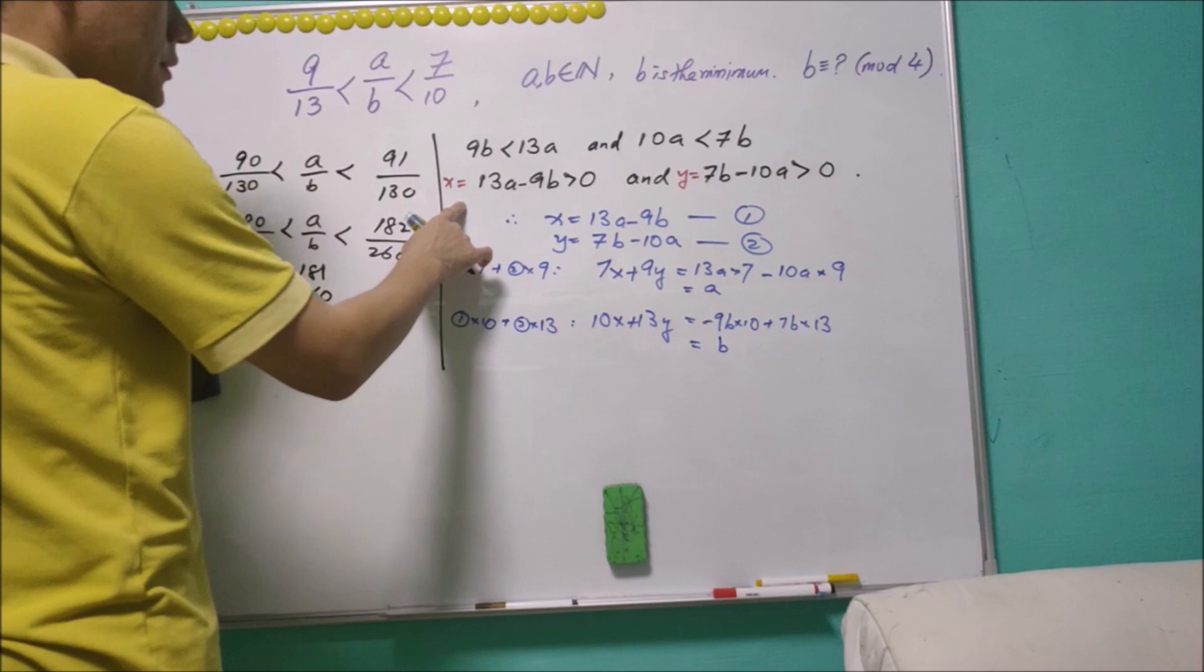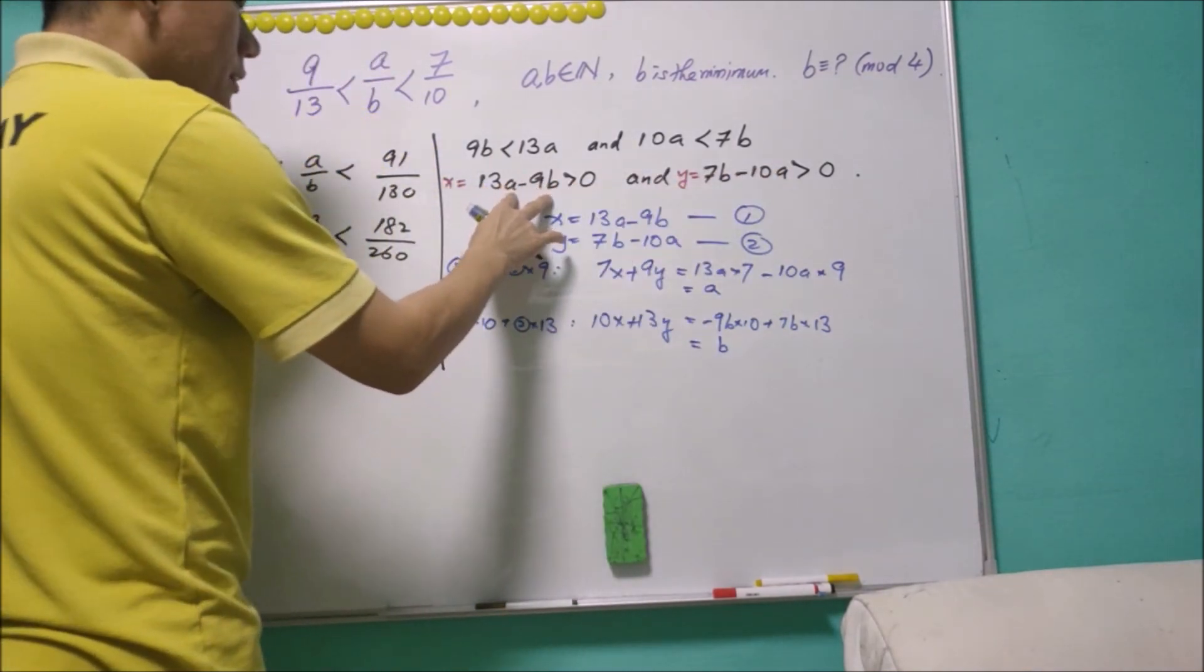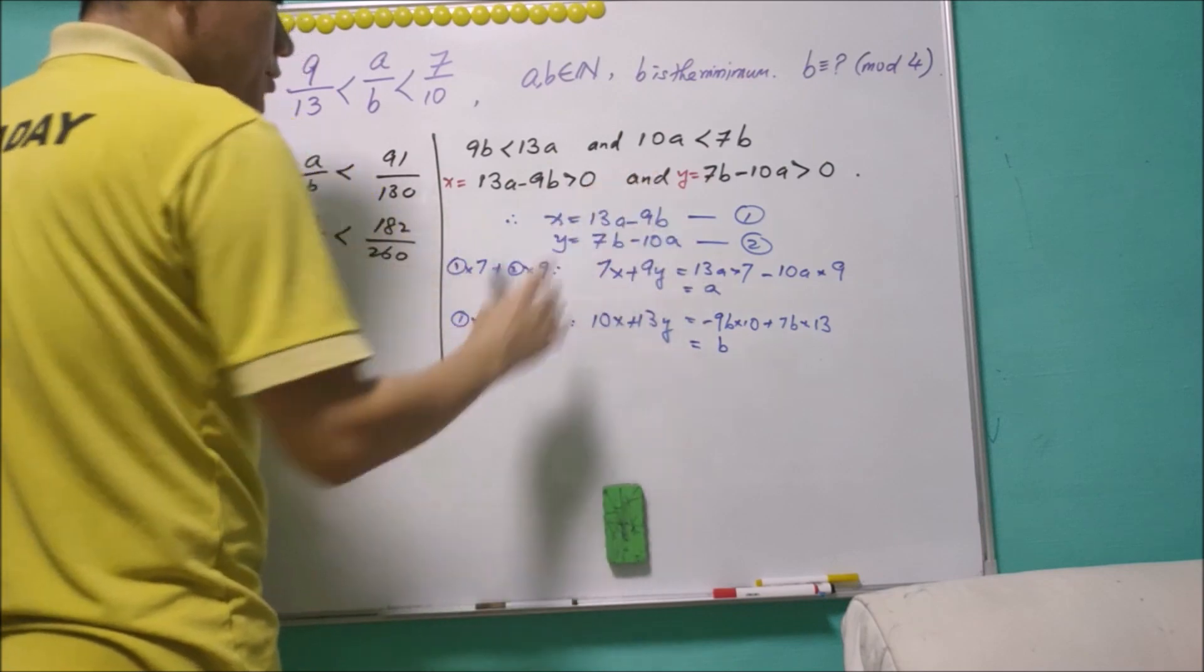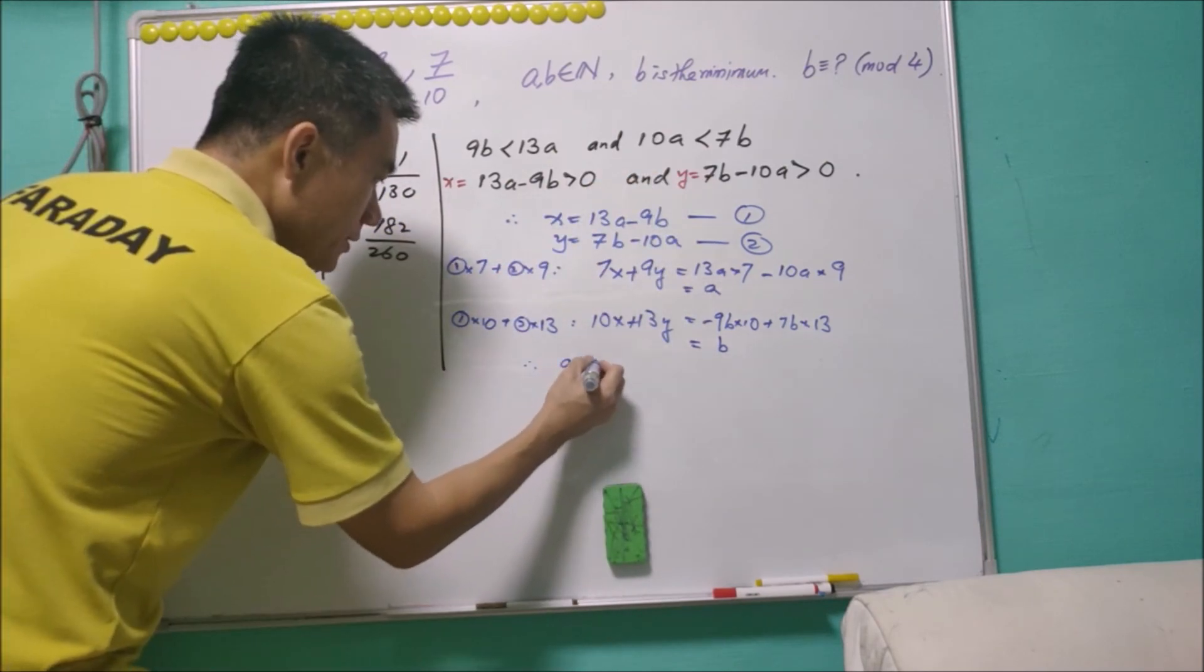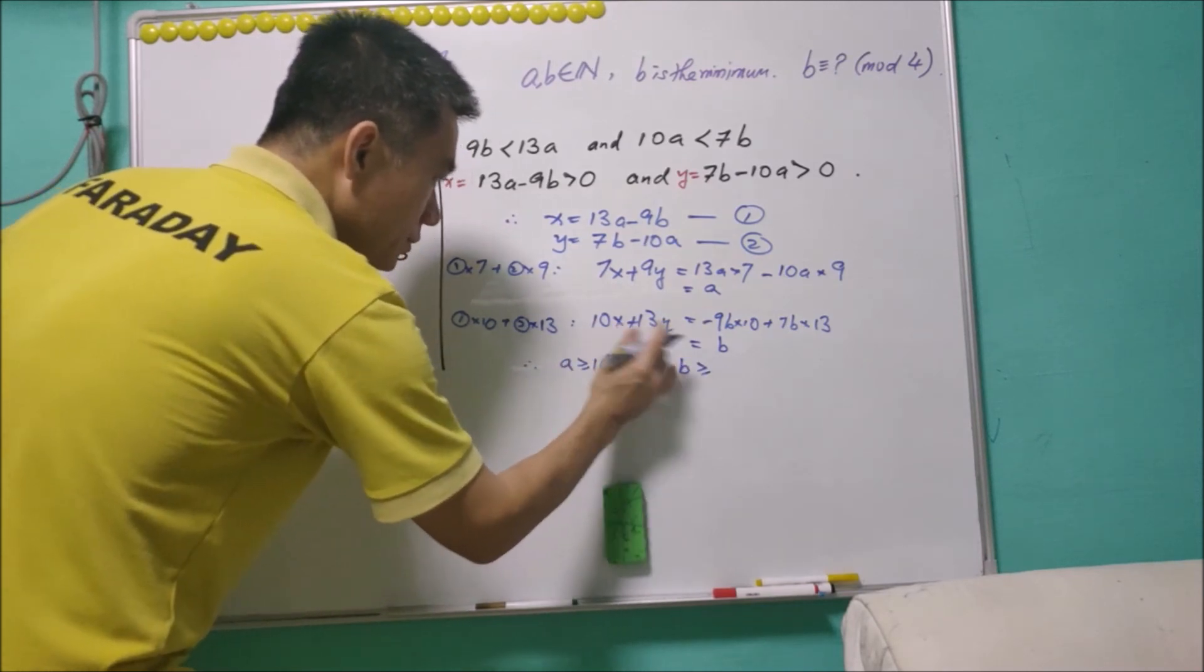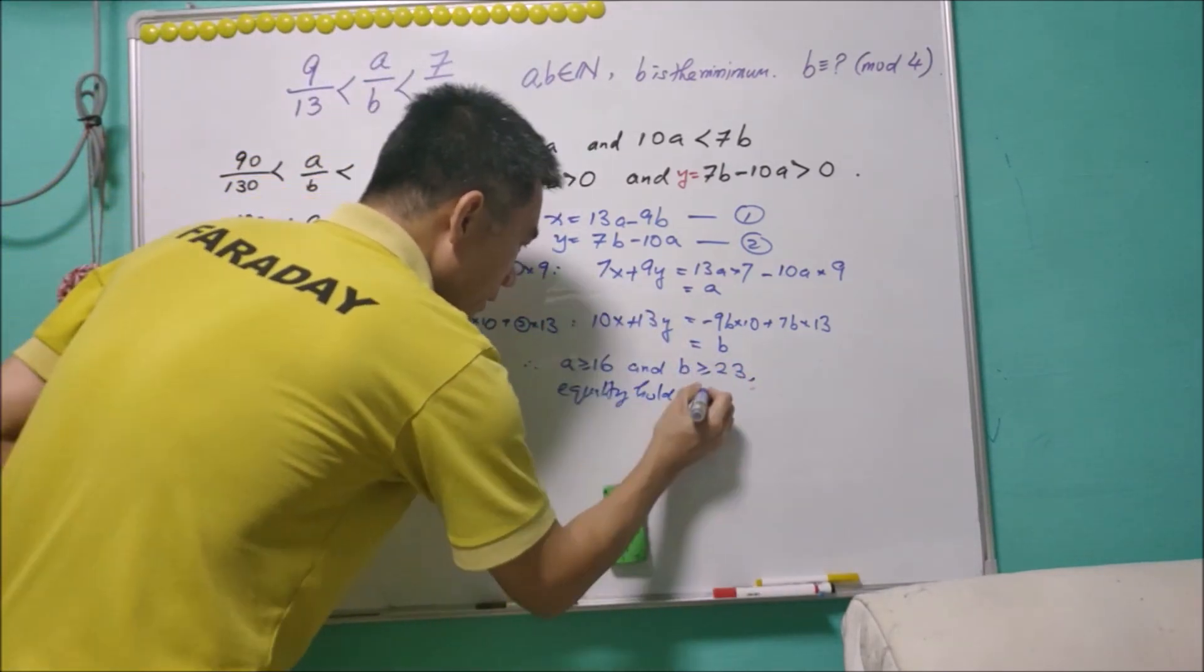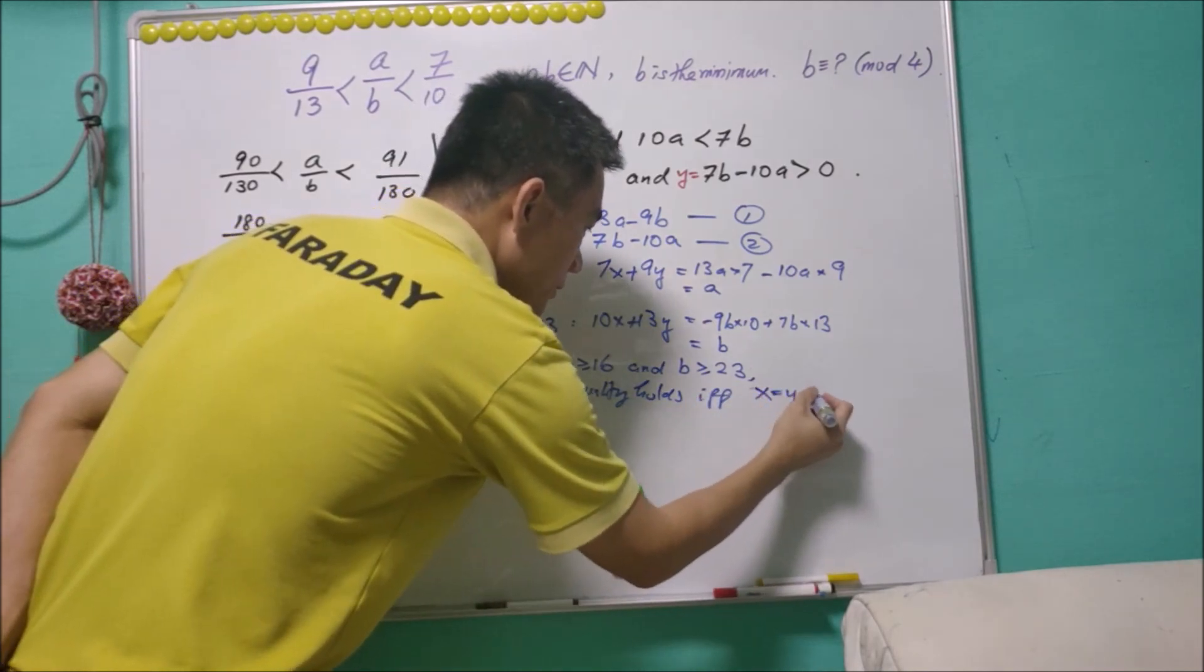Now x is positive and y is positive, and because a and b are positive integers, x must be at least equals to 1, y has to be at least equals to 1. Therefore a must be at least equals to 16 and b must be at least equals to 23. And the equality holds if and only if x equals y equals 1.